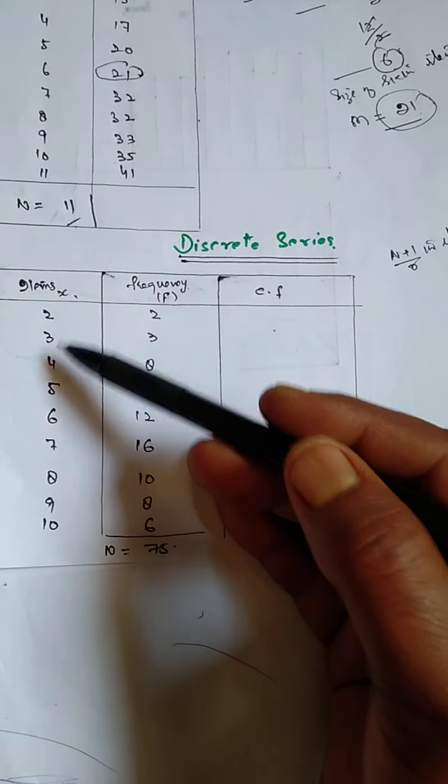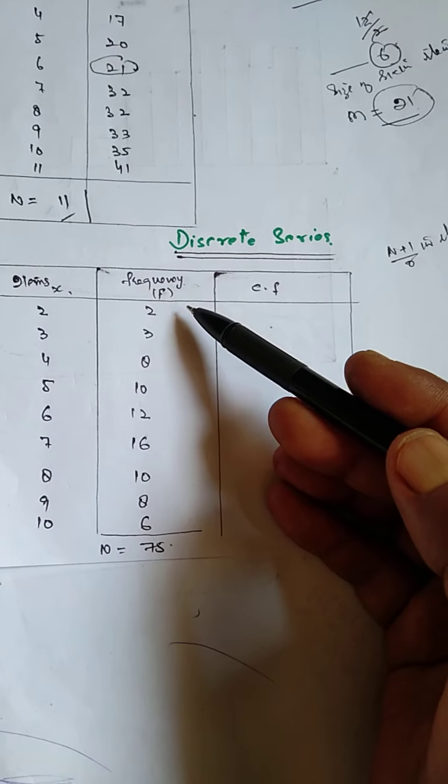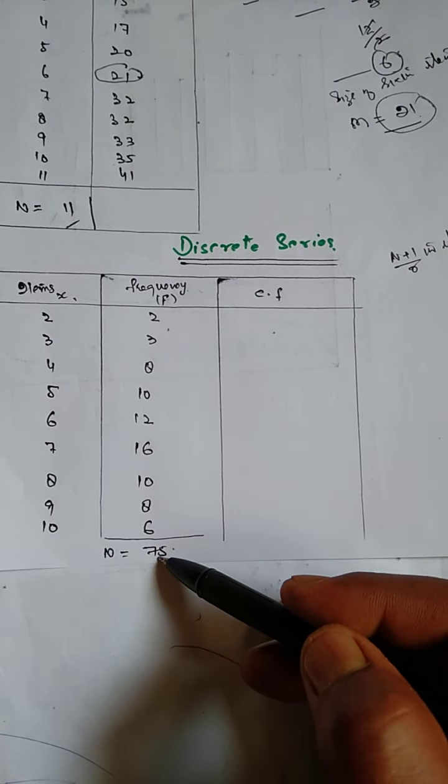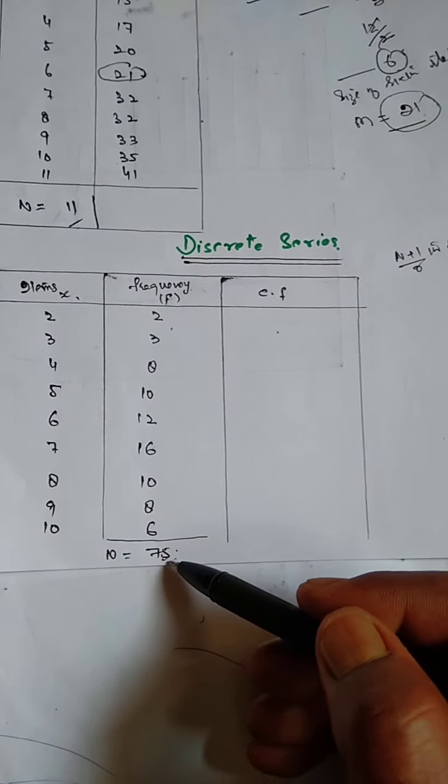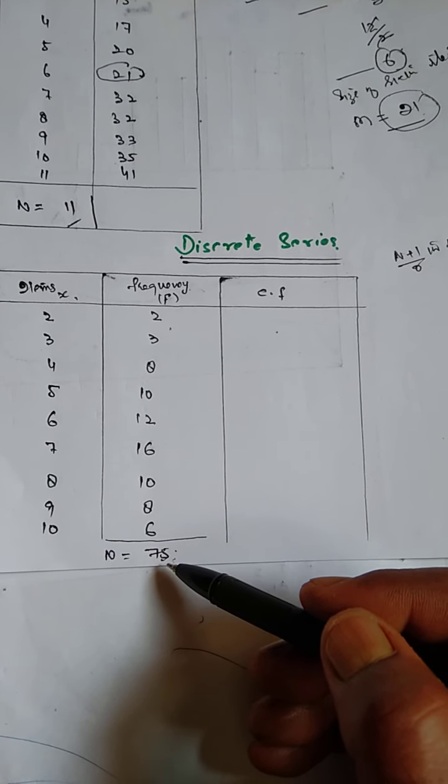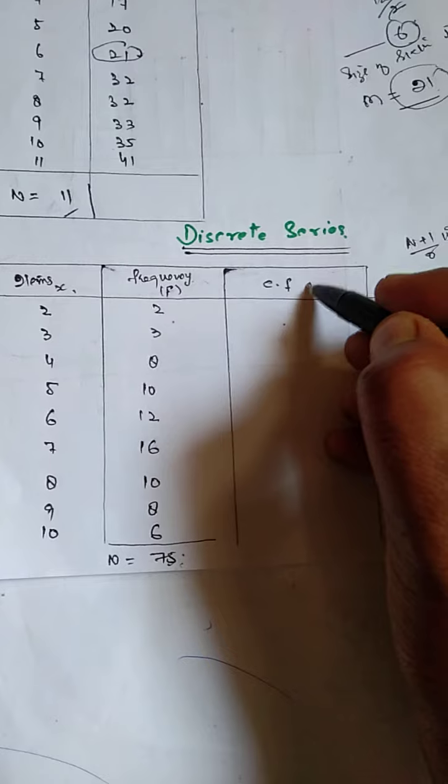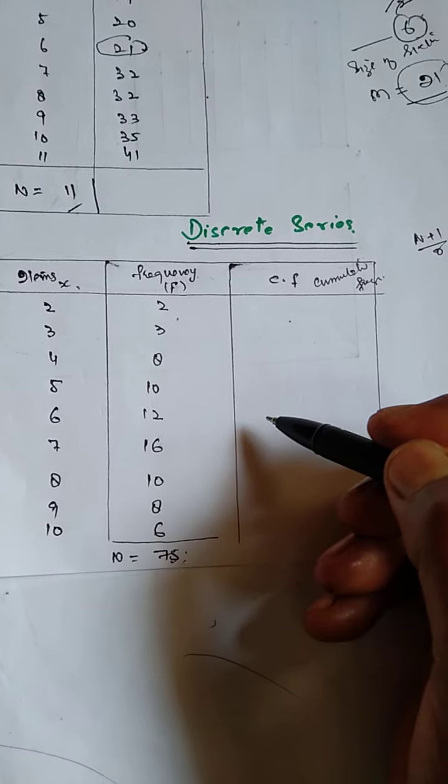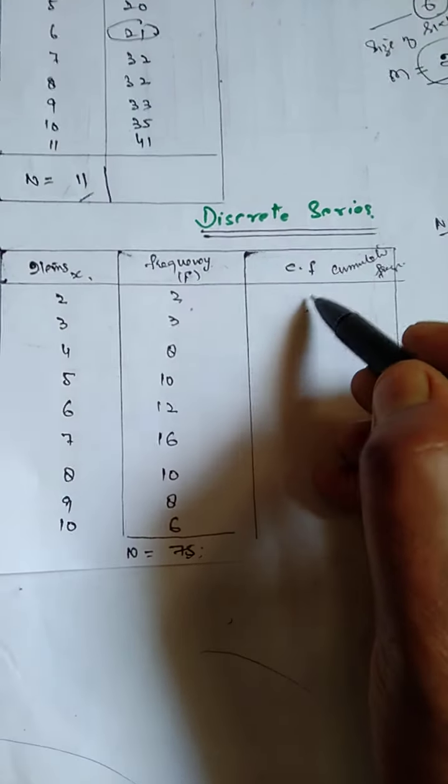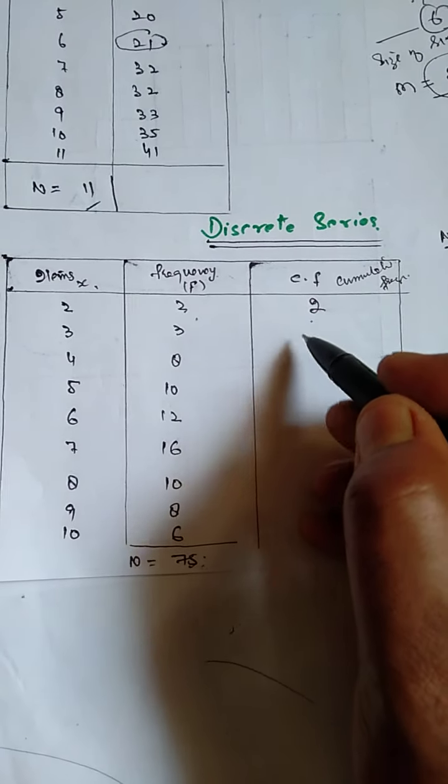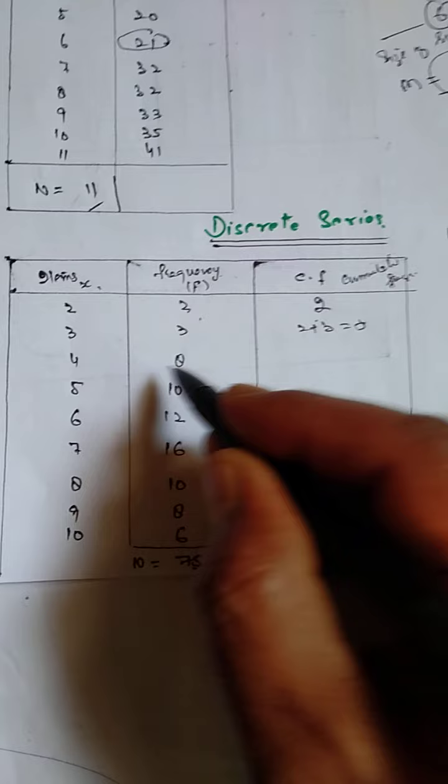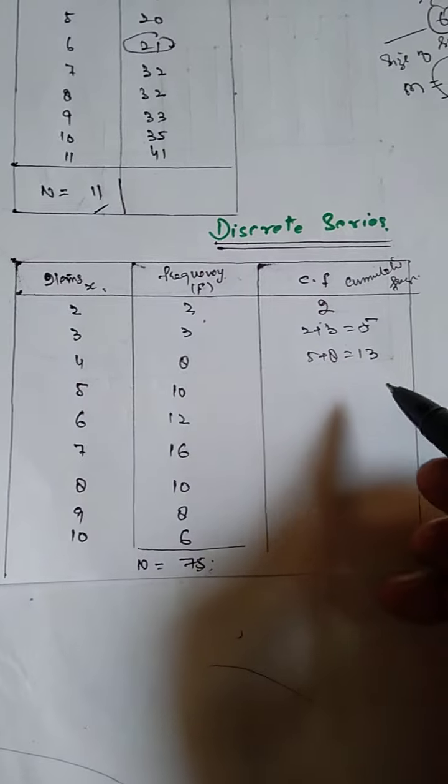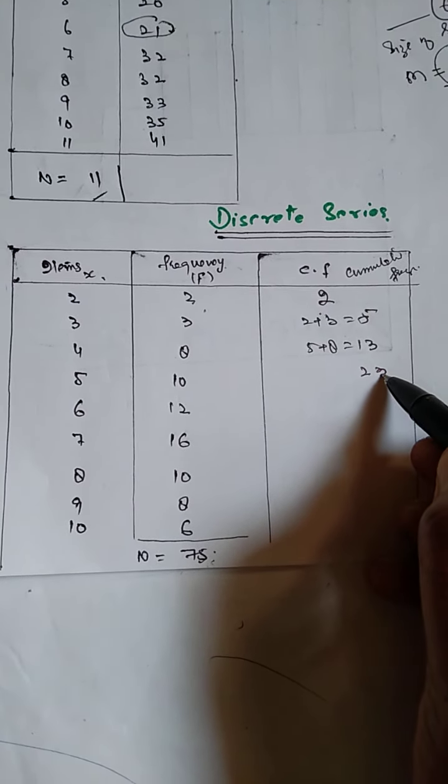We have items here: 1, 2, 3, 4, 5, 6, 7, 8, 9, 10. And corresponding to every item we have a frequency, f: 2, 3, 8, 10, 12, 12, 10, 8, 6, 4. So here our n is 75, that's total number of items or total frequency is 75. You have to find CF, cumulative frequency. We take the sum of the frequency. First one is 2 alone, second one will be first plus second, that's 2 plus 3 is equal to 5.